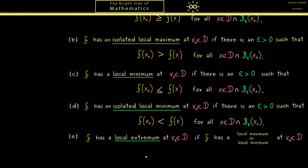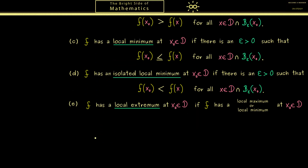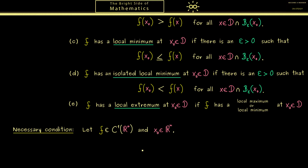At this point, recall that in the one-dimensional case we already know necessary and sufficient conditions for local extrema, and that translates nicely into the multidimensional case. In the one-dimensional case, the necessary condition for a local extremum needs the first derivative of f. We now consider continuously differentiable functions defined on Rn, so the gradient exists at all points. If f has a local extremum at x0, we can show — in the same way as in the one-dimensional case — that the first derivative at x0 has to vanish.